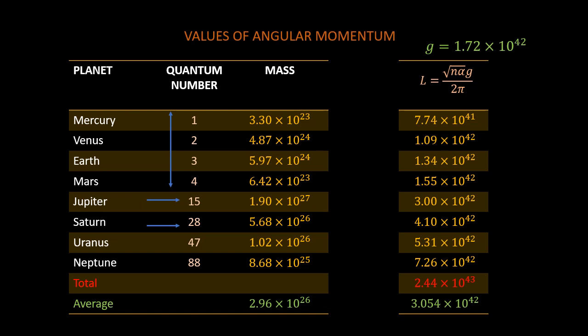This suggests vacant orbits that could contain planets that may be too small to be considered planets, such as Ceres, Pluto and so on. Or maybe the planets from Jupiter are too big that they tend to occupy more space than the smaller planets and hence more orbits.